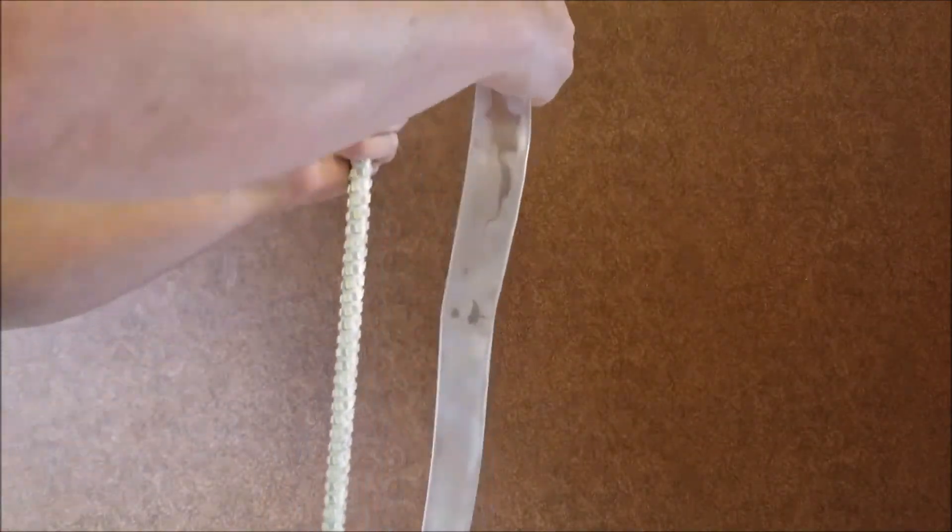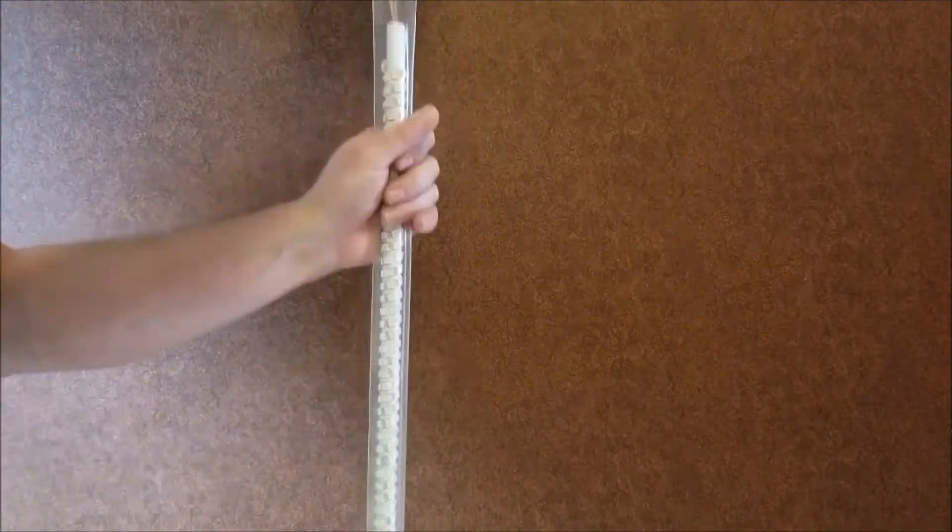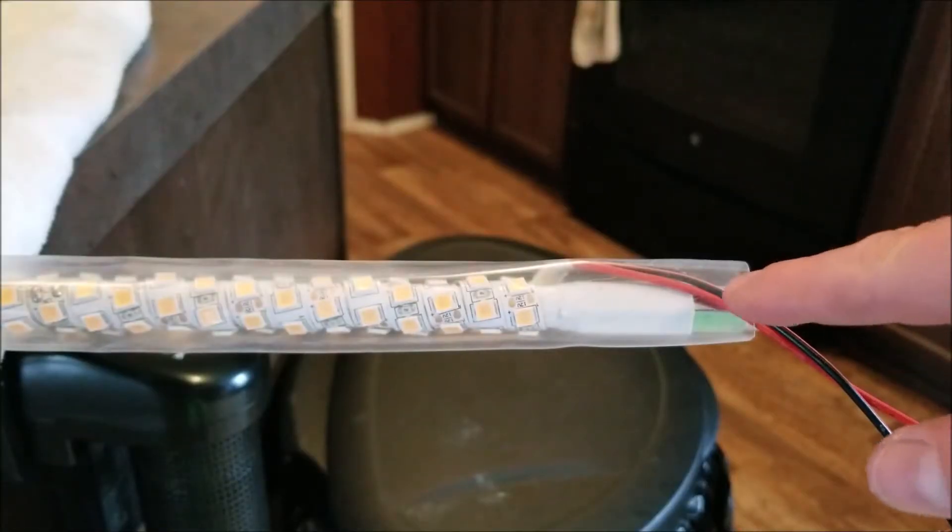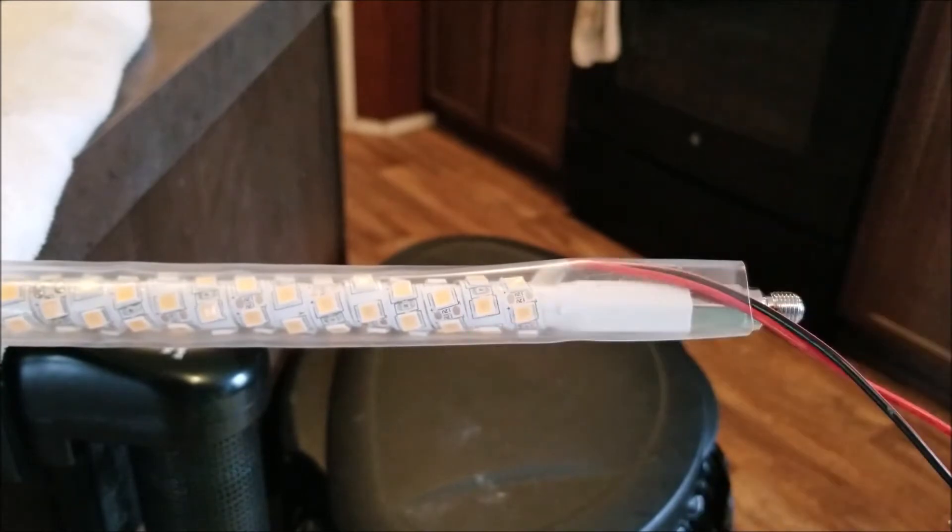Ready to put the shrink wrap tubing over the CB antenna. I have the shrink wrap tubing all the way down to where I want it right here, ready to start heating this up.